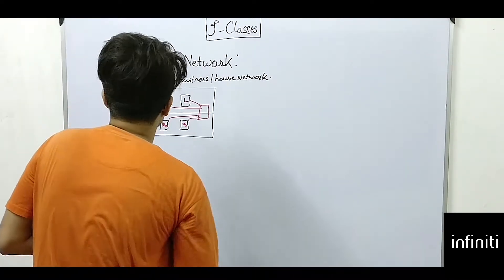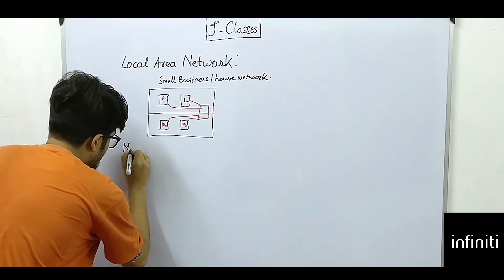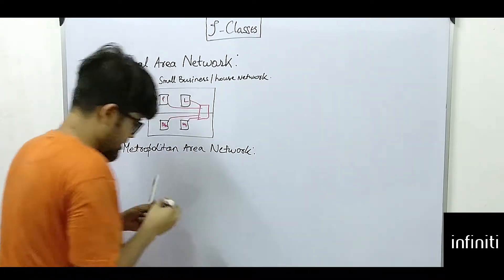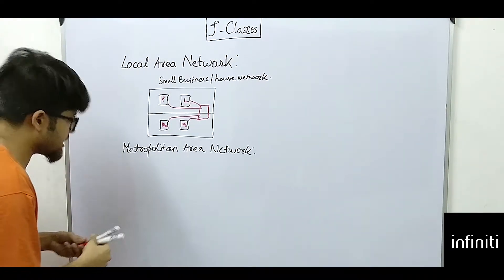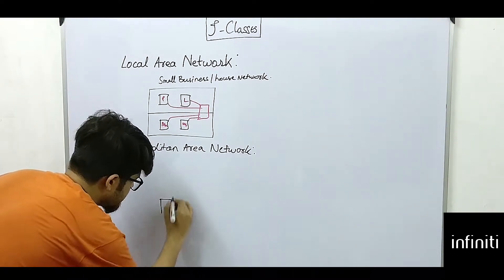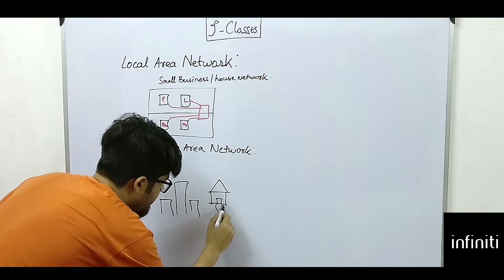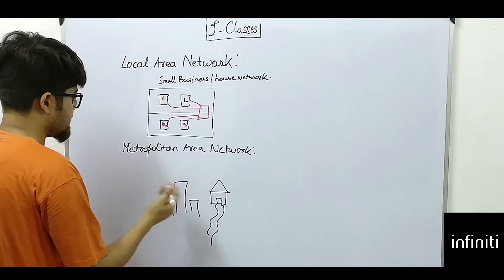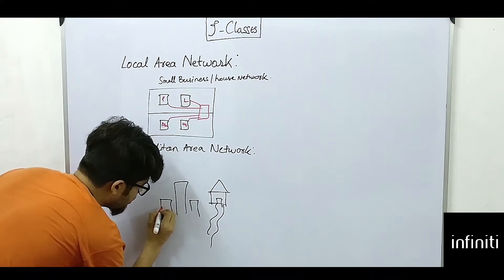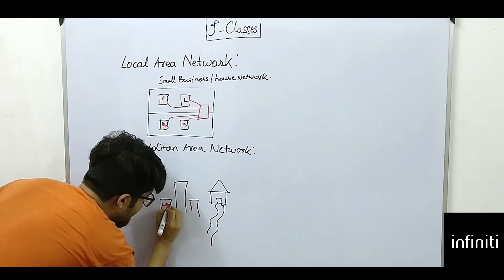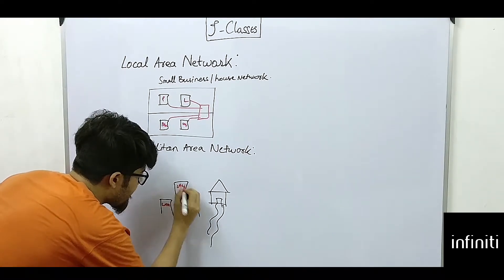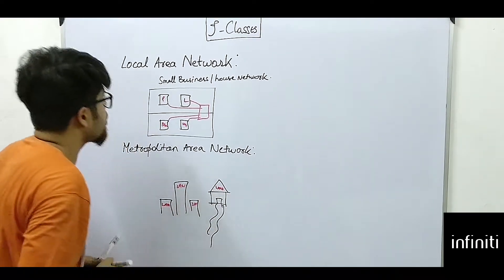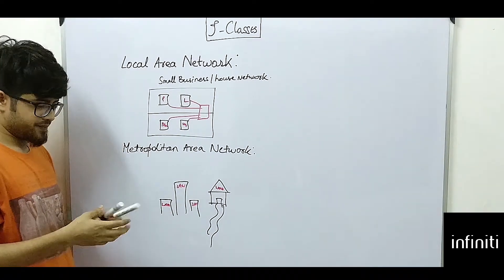So we will go into what is metropolitan area network. It's just like the connection spread over a city. Suppose these are the houses, typical Indian houses. So these are connected over a network. So what it does is, here if a particular house has a network, that is called as LAN, local area network, or a business, or maybe an office, or maybe a particular private network.